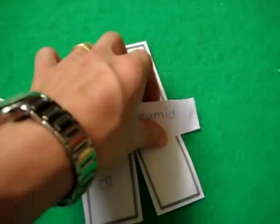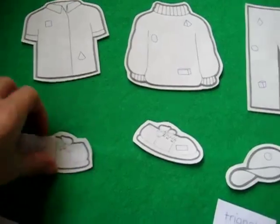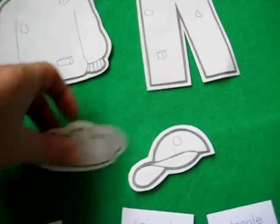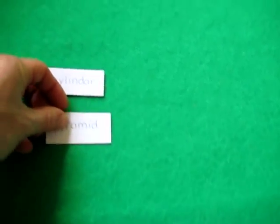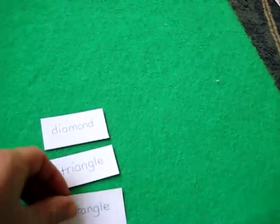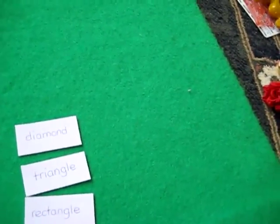And after we're done that, we take all the shapes and we match them. Actually put our clothes away - that was our little clothing theme. And then I put on one side all the flat shapes: diamond, triangle, rectangle, circle, oval.